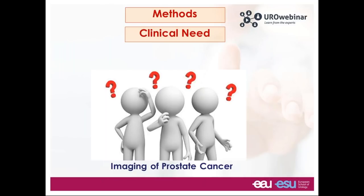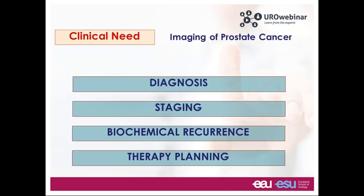So those are the methodological premises. Let's now focus on the clinical needs — which are the clinical situations where PET-CT can really make a difference. Theoretically, you can use PET-CT for identification of prostate cancer (primary diagnosis), for staging, for biochemical recurrence — which remains the most important application — and for therapy planning.